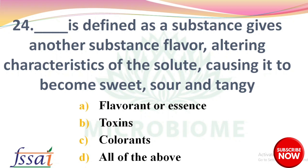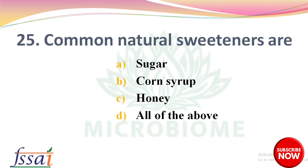Next question: dash is defined as a substance used to alter the characteristics of the food, causing it to become sweet, sour, etc. — options: flavorant or essence, toxins, colorants, all of the above. The right answer is option A, flavorant or essence. Next, common natural sweeteners are — options: sugar, corn syrup, honey, all of the above. The right answer is option D, all of the above.